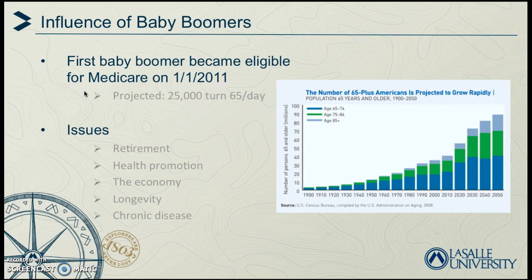By 1964, there were 76.4 million baby boomers who made up almost 40% of the nation's population. Now they are beginning to age, and issues we see include retirement, health promotion needs, how it affects the economy, increased longevity with more individuals living longer, and chronic disease implications.